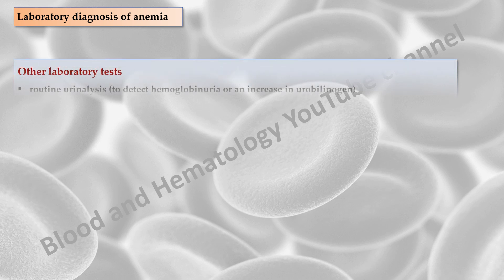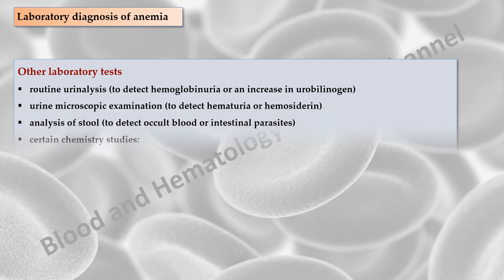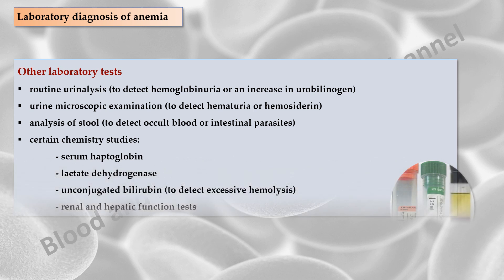Other laboratory tests that can assist in establishing the cause of anemia include routine urinalysis with microscopic examination and analysis of stool. Certain chemistry studies are also very useful, such as serum haptoglobin, lactate dehydrogenase, unconjugated bilirubin, and renal and hepatic function tests.